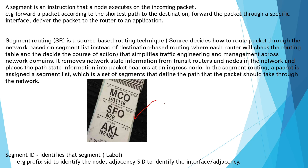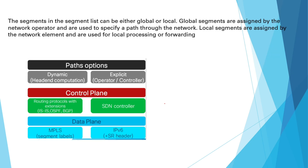In the case of MPLS forwarding, a segment ID is just a label value — nothing else. If we configure segment routing we will get multiple path options like dynamic and explicit. If you use RSVP you know these terms easily. The control plane uses ISIS, OSPF, BGP, or an SDN controller, and on the data plane side for MPLS there is no change — the only change is on the routing protocol side. But if we are going with SRv6, then yes, it is completely different and new changes are there.